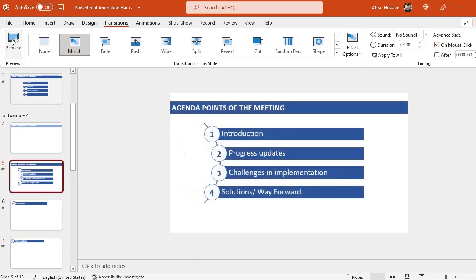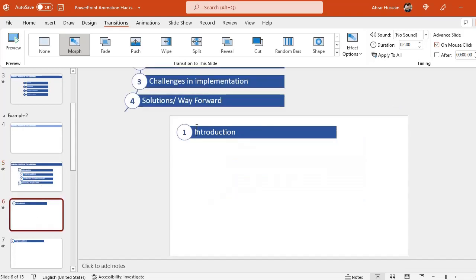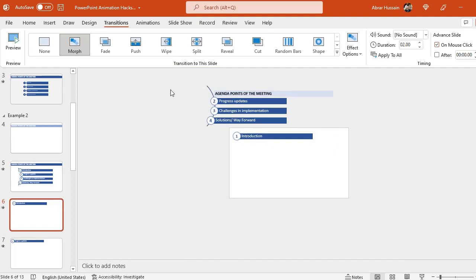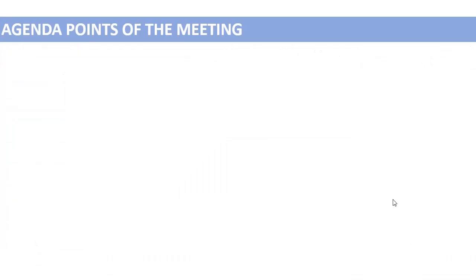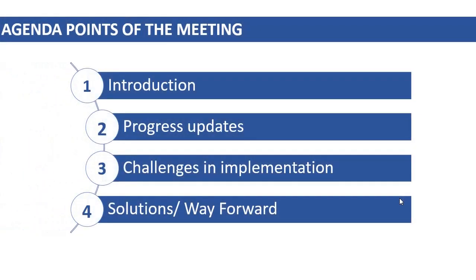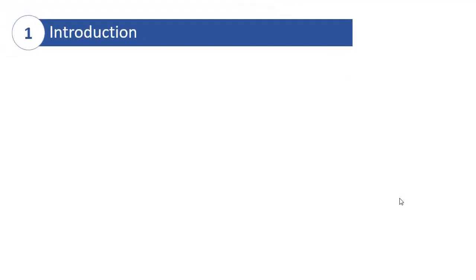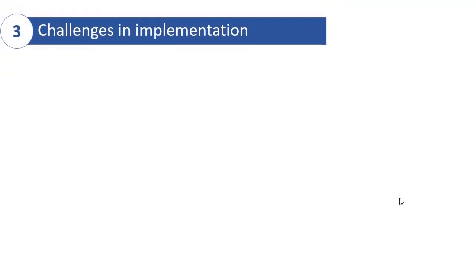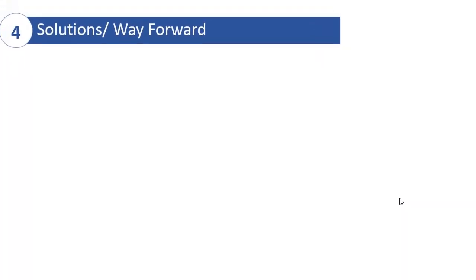Let me show you again. In the next slide, I just duplicated this one. What I did here is I just kept the introduction and removed the rest of the items — but you must not delete the content. Just keep them outside the slide area. You will see now — it's like this first, then you see the introduction part, then we have the progress updates, then the third agenda item, then the fourth agenda item.